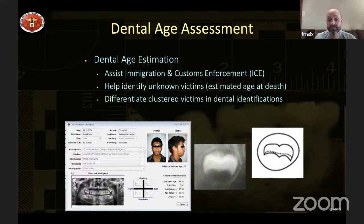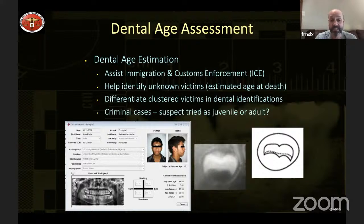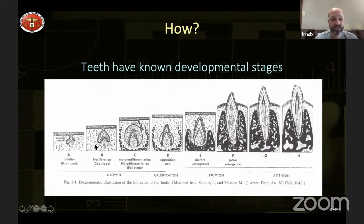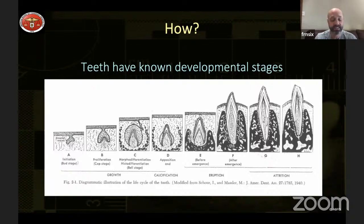In criminal cases, age estimation helps determine whether a suspect should be tried as a juvenile or adult — sometimes suspects lie about their age and we can look at teeth to help determine the real age. Teeth have known developmental stages — bud, cap, bell — and these stages happen at well-defined moments in life, with some genetic and ethnic variation but on a pretty well-established timeline. Teeth also age visibly; you can look at worn teeth and tell the person is likely in their 50s or 60s.